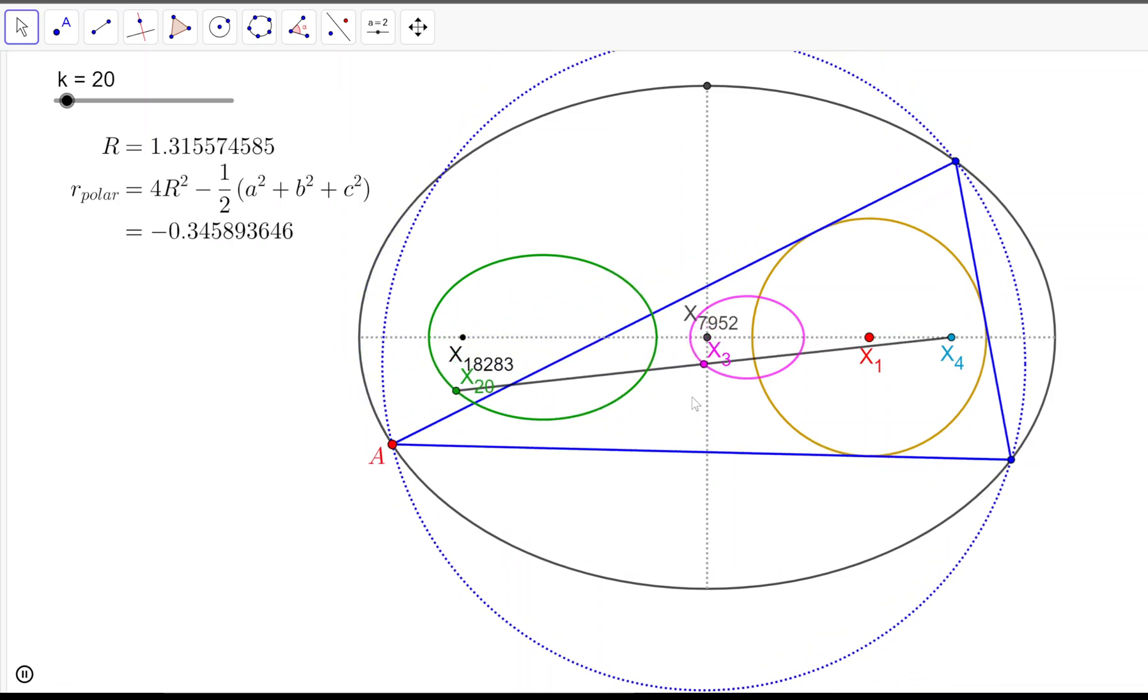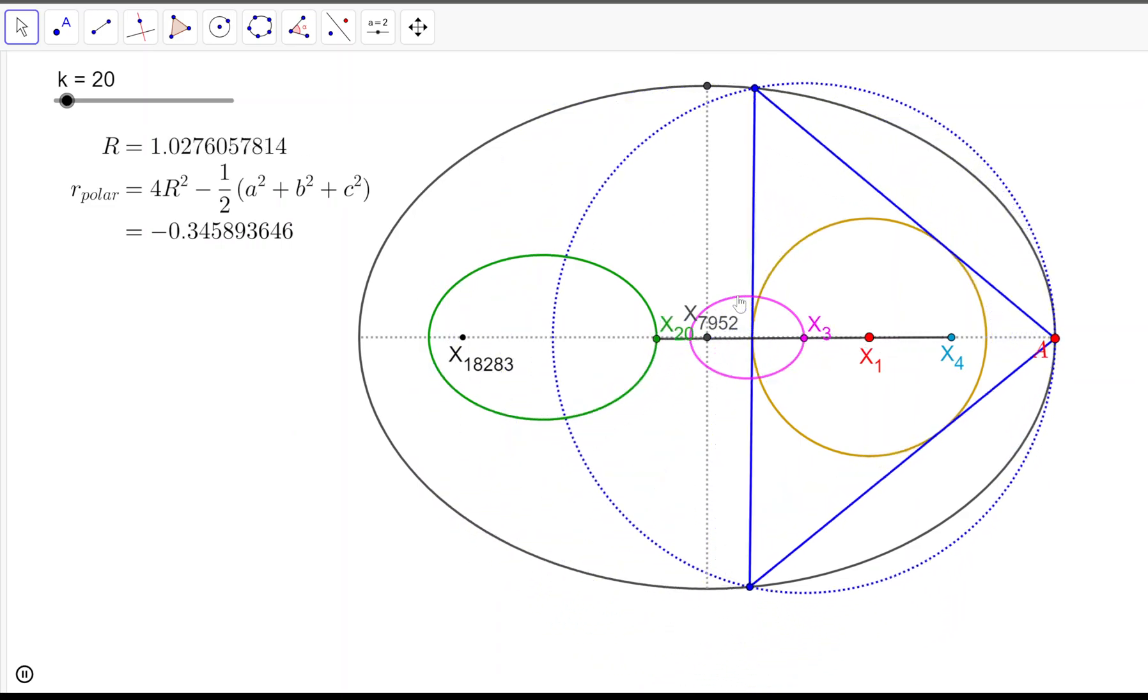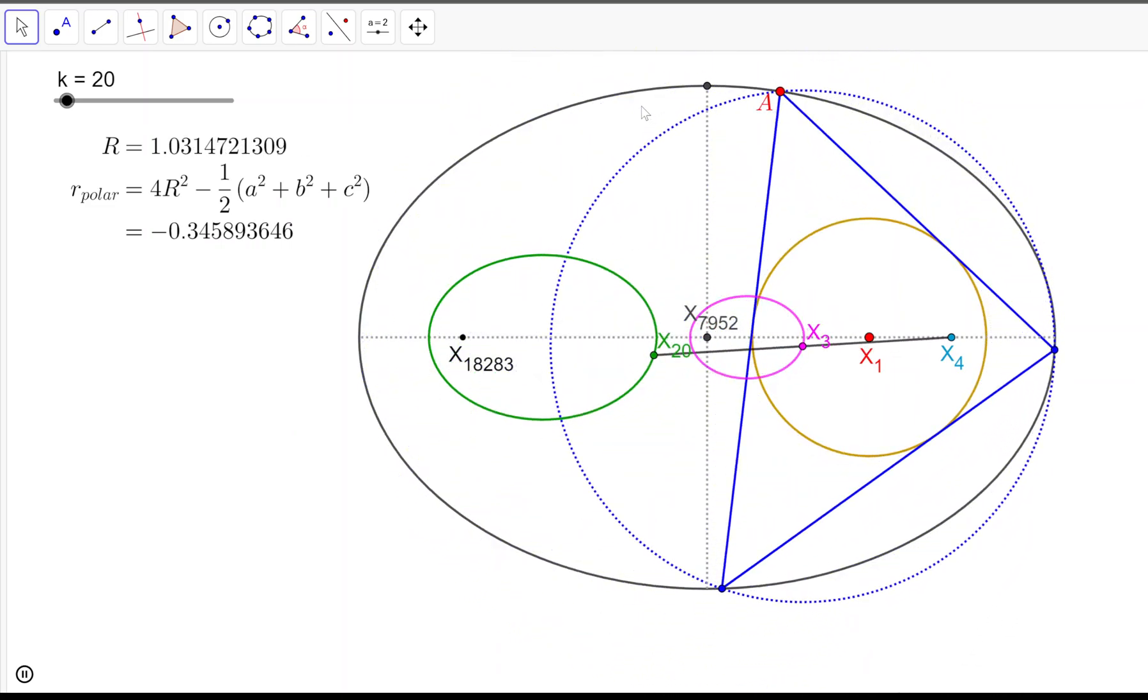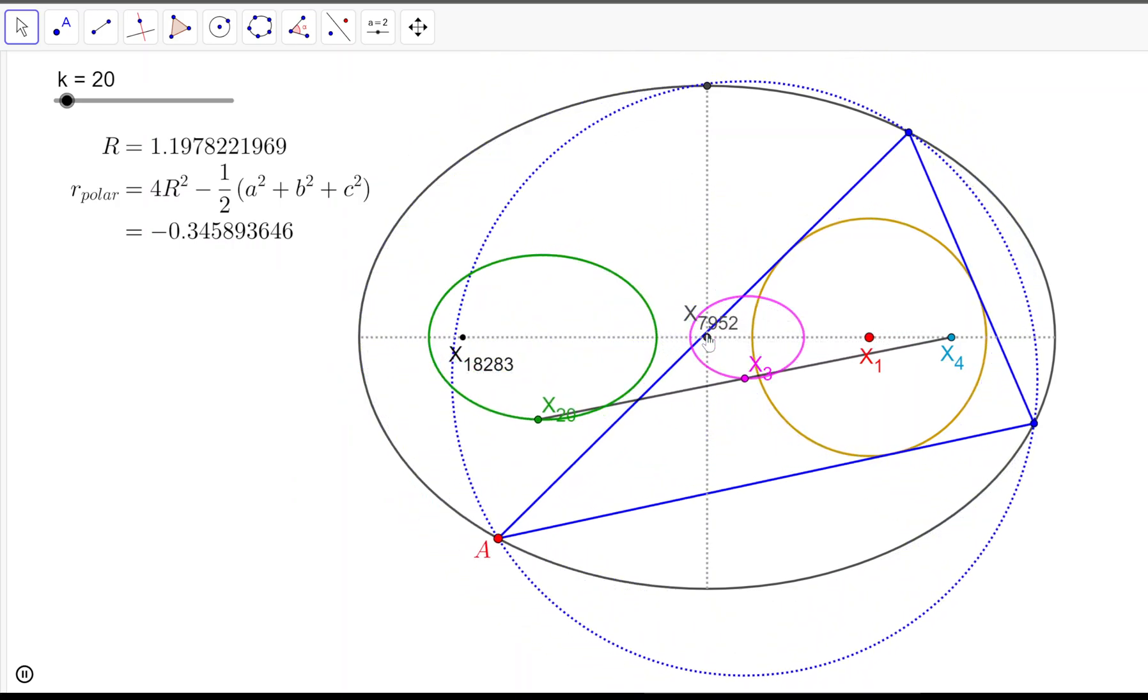X3, the circumcenter, will sweep an ellipse which is homothetic with the orthofocal circumellipse, with a focus on its center, 7952.